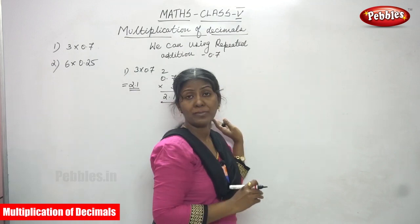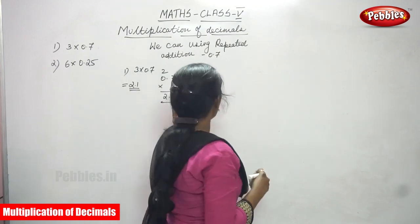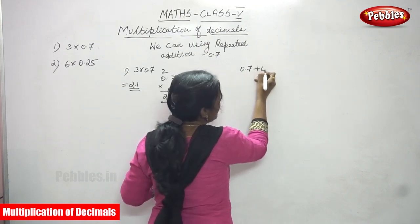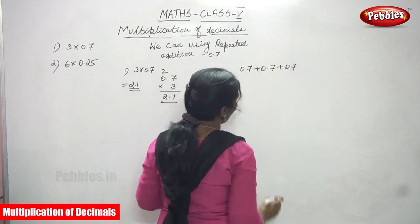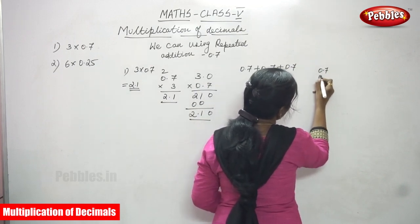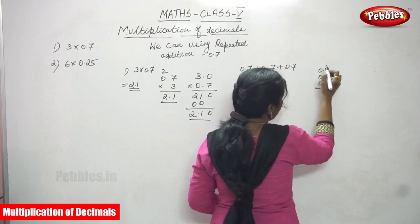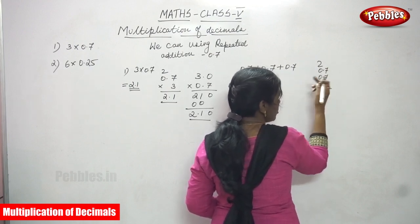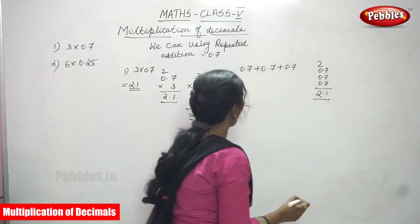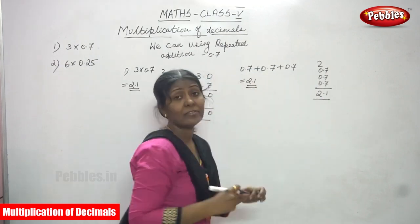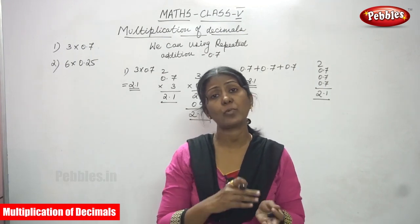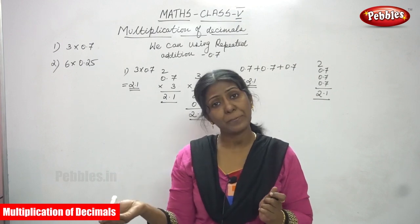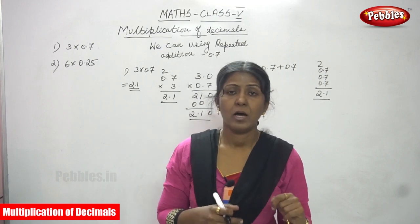This is multiplication of decimals. Next we see repeated addition. Multiplication can otherwise be called repeated addition. The number is 0.7, and you write it 3 times: 0.7 plus 0.7 plus 0.7. So 7 plus 7 plus 7 is 21, carry 2. Then 0 plus 0 plus 0 plus 2 is 2. The answer is 2.1. Both multiplication and repeated addition give the same answer, 2.1.